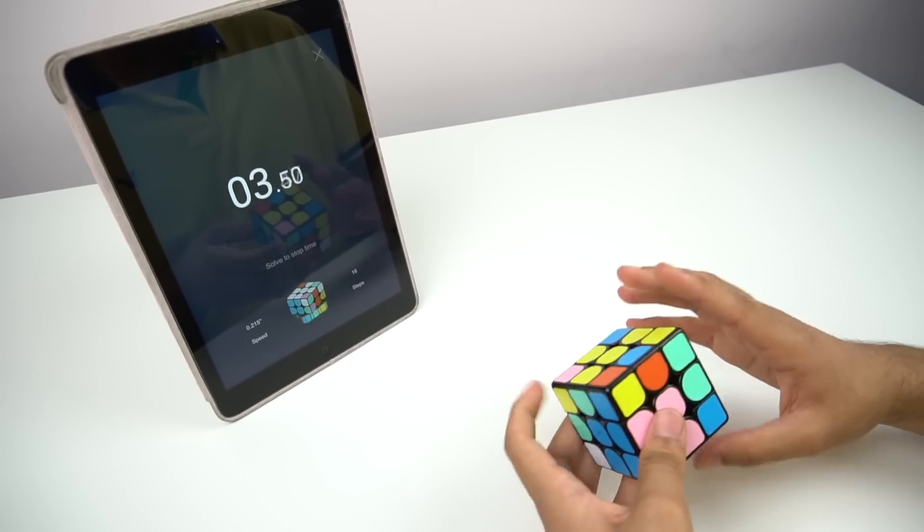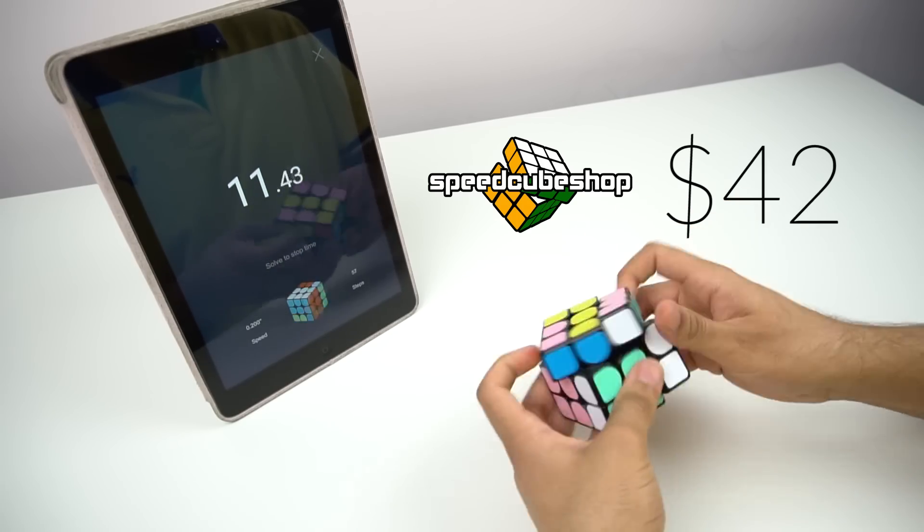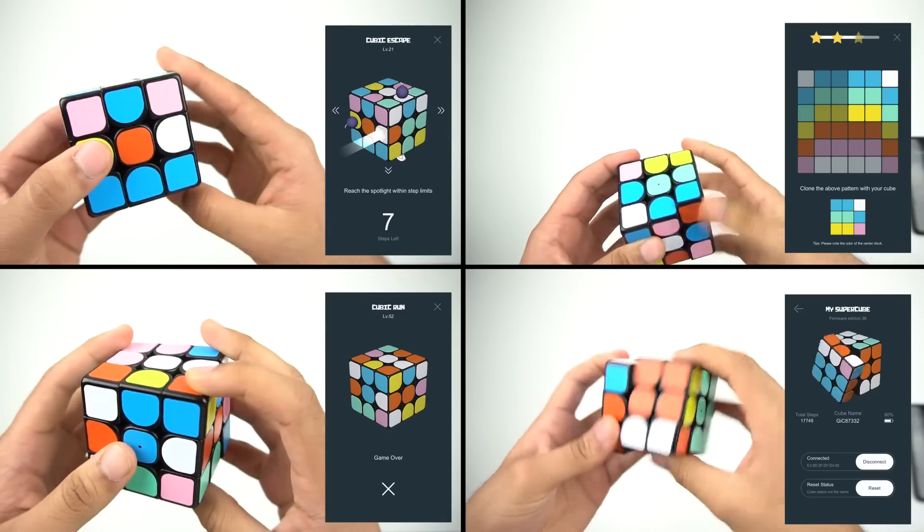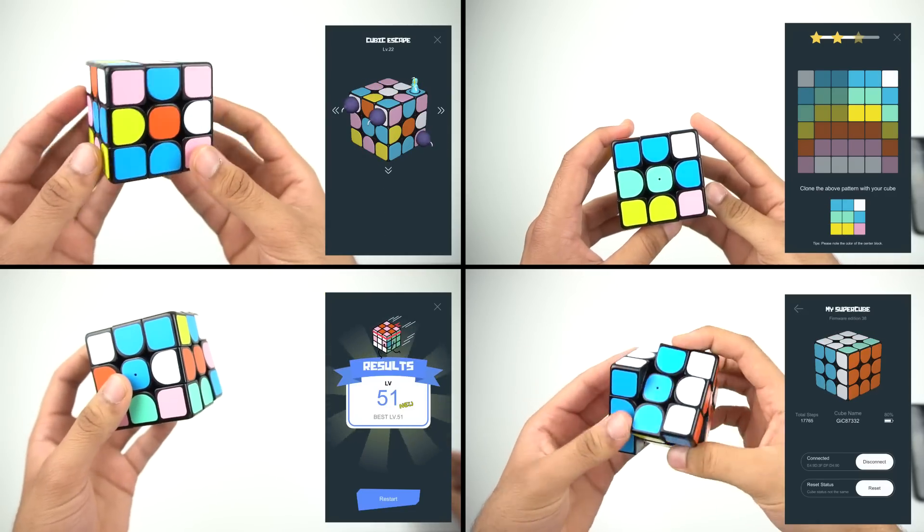It's available at SpeedCube Shop for $42 USD, around the same price as a flagship cube. The SuperCube app also features several other guides and minigames, all of which will be covered in this video, but first let's take a quick look at the hardware.